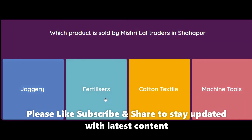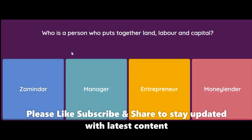Which product is sold by Mishri Lal traders in Shahapur? Jaggery, fertilizers, cotton textile, or machine tools? Mishri Lal traders buy sugarcane from farmers and sell jaggery in Shahapur. So jaggery is the answer.